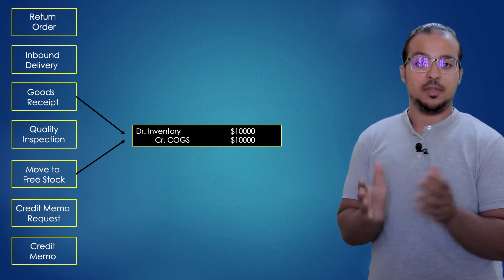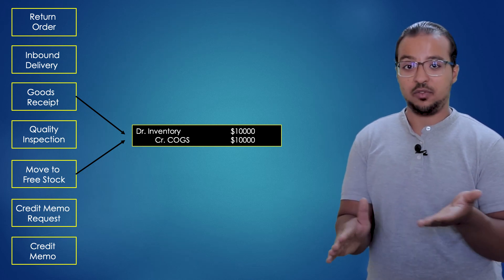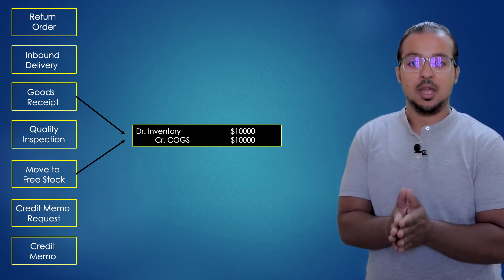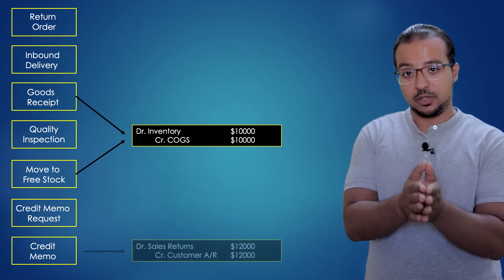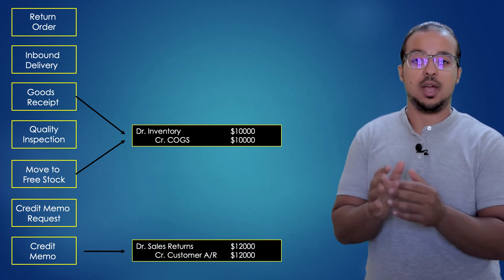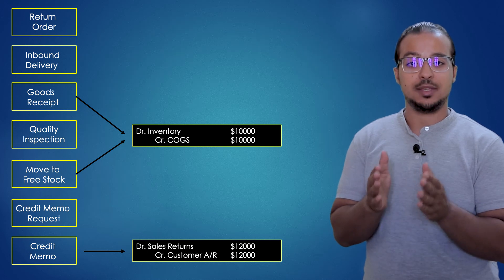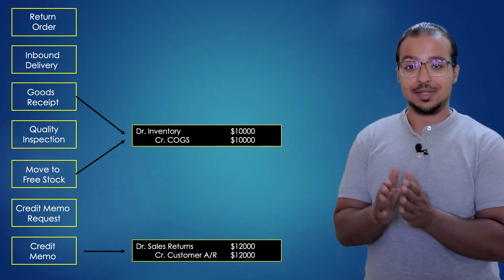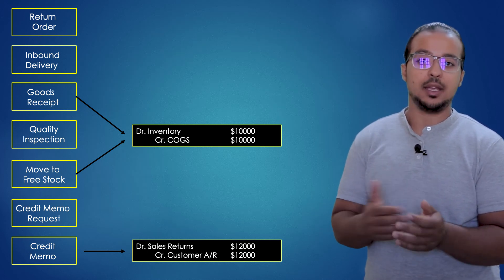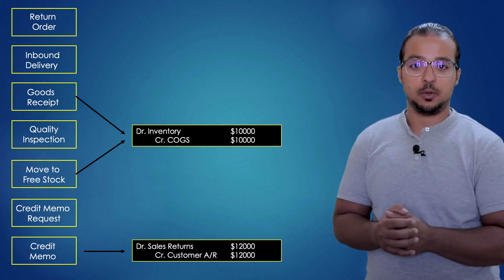In the credit memo request, we don't have any financial entries — it is still a request. After we convert the request into a credit memo, we have the last financial entry: a debit to the sales account or a sales return account, and a credit to the customer accounts receivable.